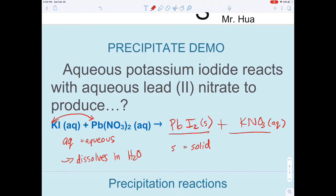This is that yellow stuff you saw in the test tube. We also got potassium nitrate in our solution. You might be wondering, how do we figure that out? How did Mr. Hua know that?